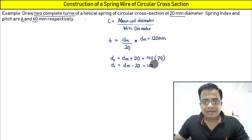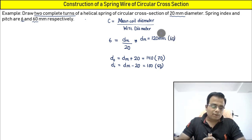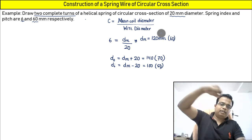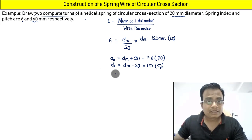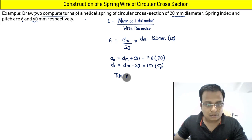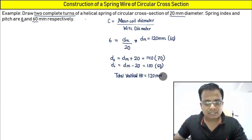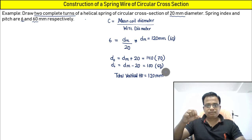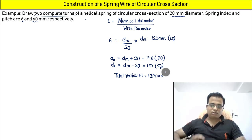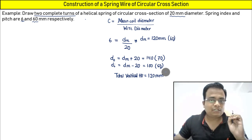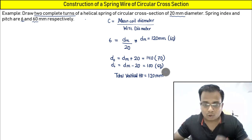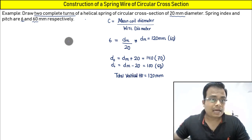In terms of radius: outer radius is 70 mm, inner radius is 50 mm, and mean radius is 60 mm. For two revolutions, the total height of the spring is double the pitch: 60 + 60 = 120 mm. So the height of the spring is taken as 120 millimeters. The pitch of 60 mm has already been accounted for.